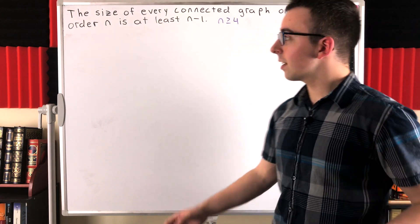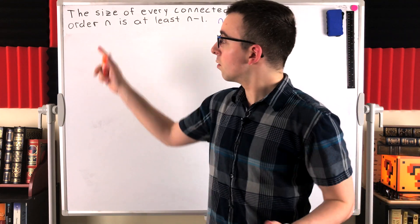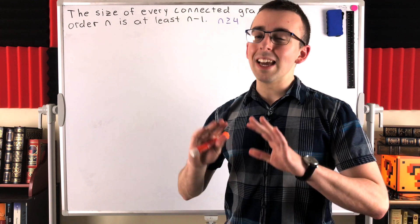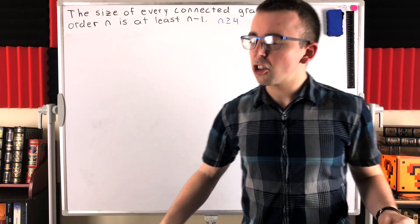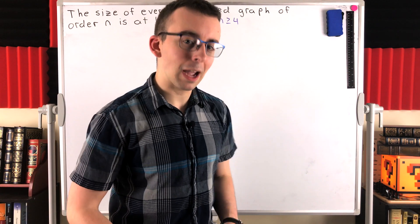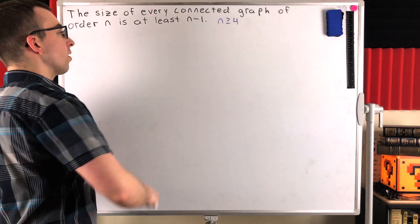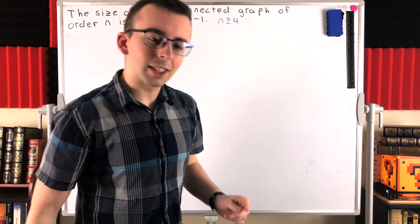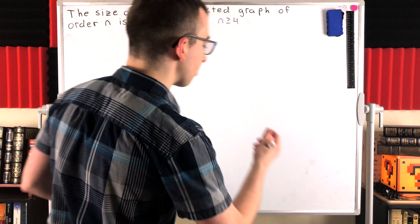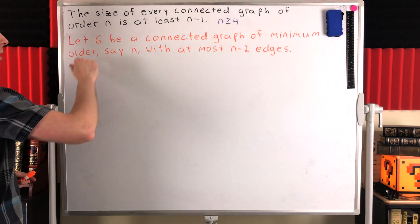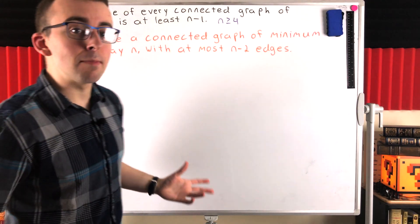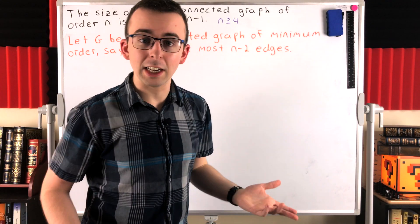We'll suppose for the sake of contradiction that there does exist some connected graph of order n whose size is not at least n minus 1 — in other words, its size would be at most n minus 2. Now among all such counterexamples to our claim, we're going to pick out a minimum counterexample. In particular, we're going to minimize the order. Among all such counterexamples, let's pick out a graph g that has the fewest number of vertices. So g is a counterexample of minimum order.